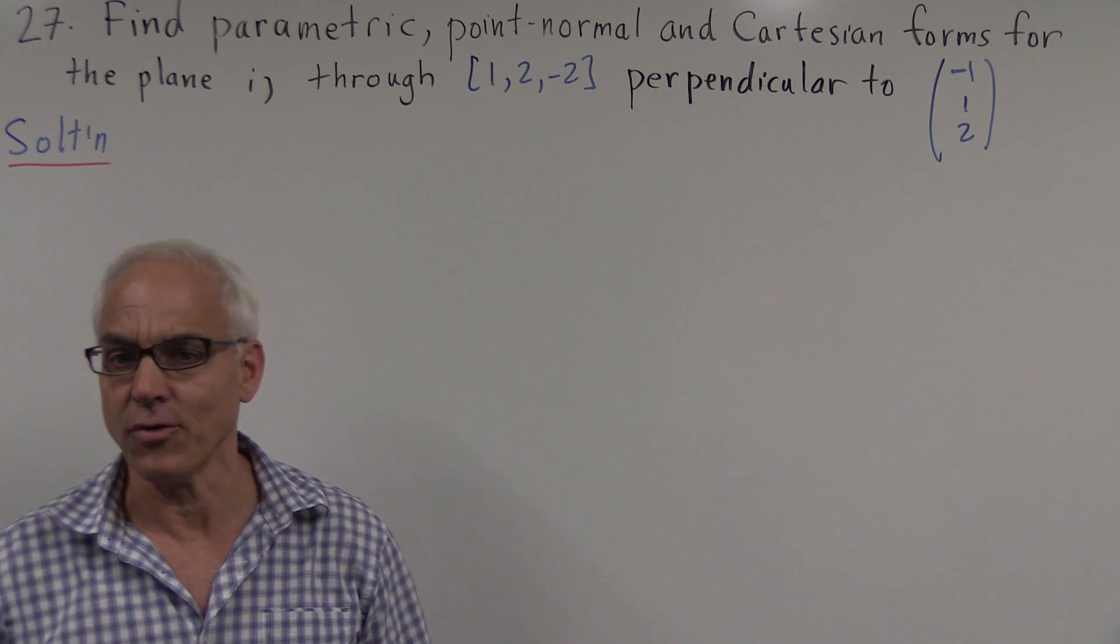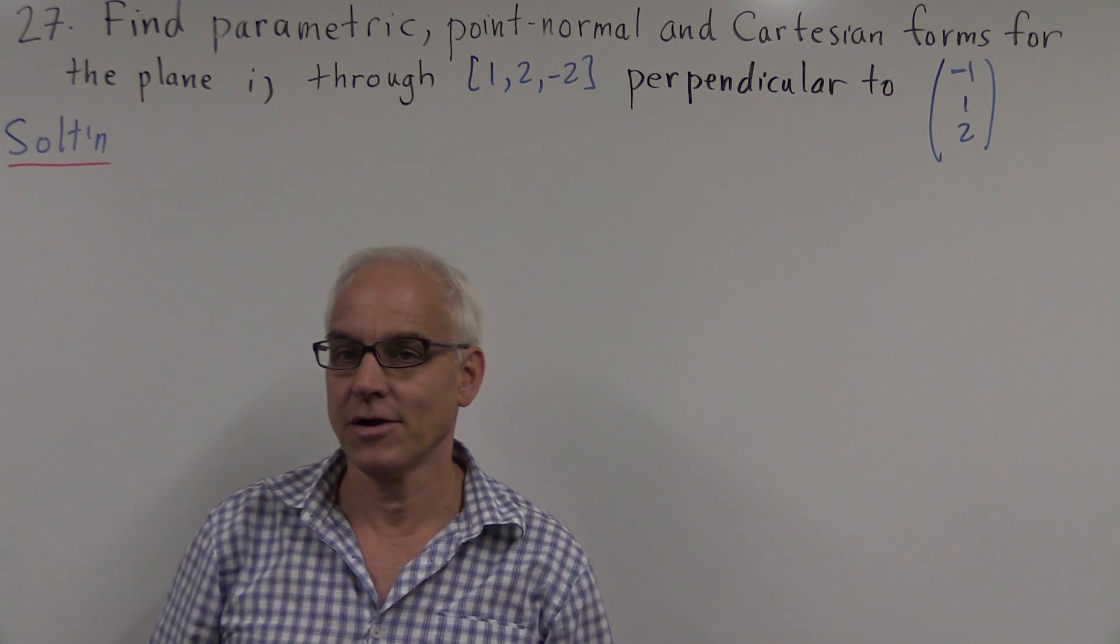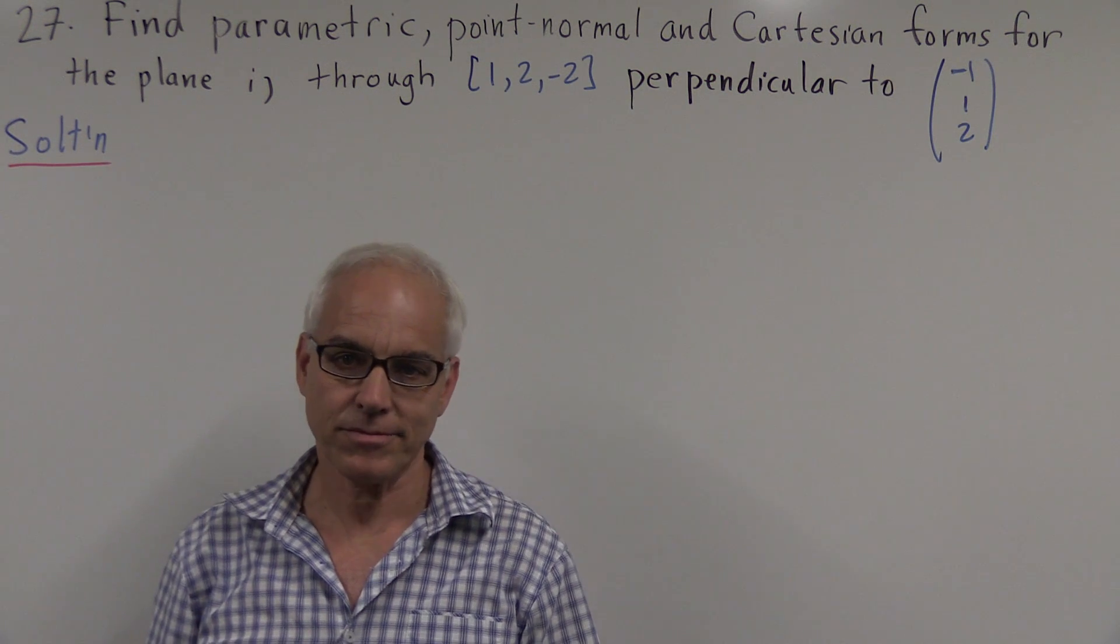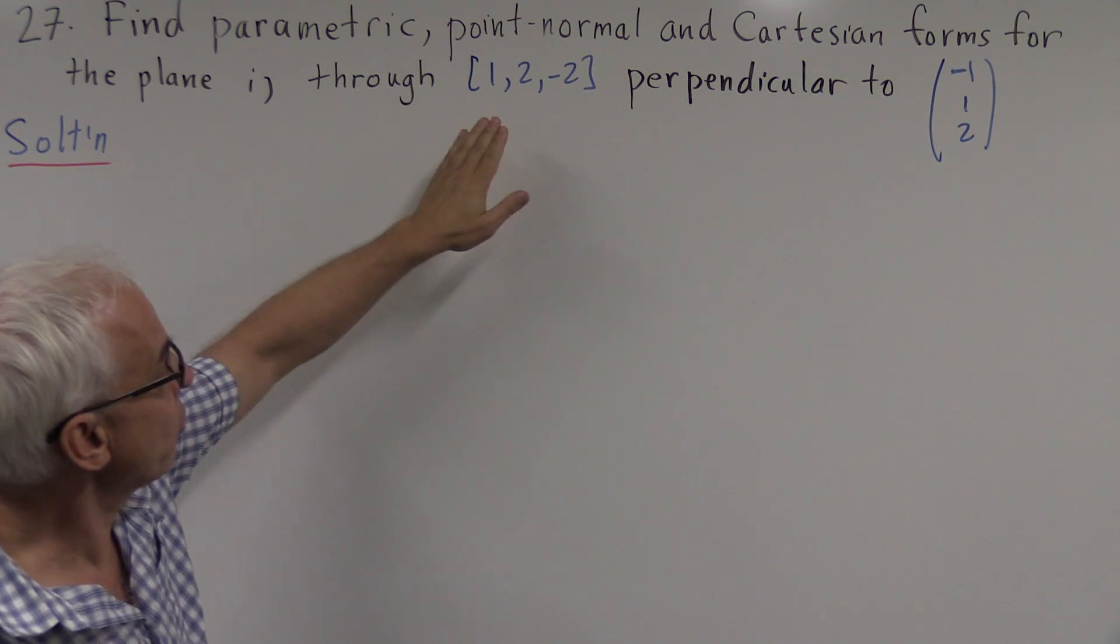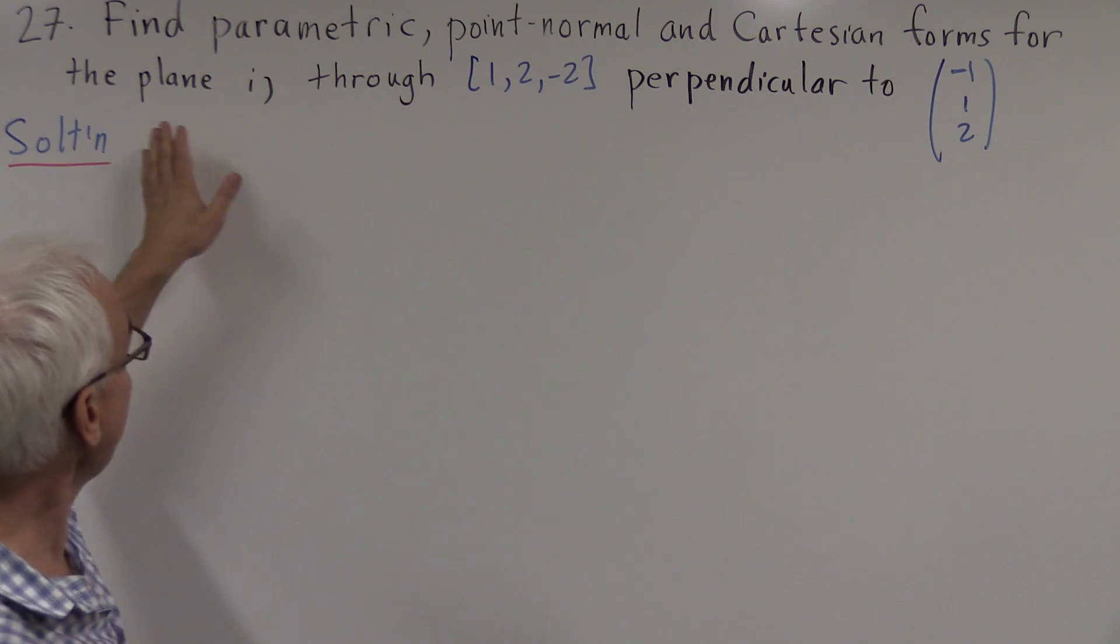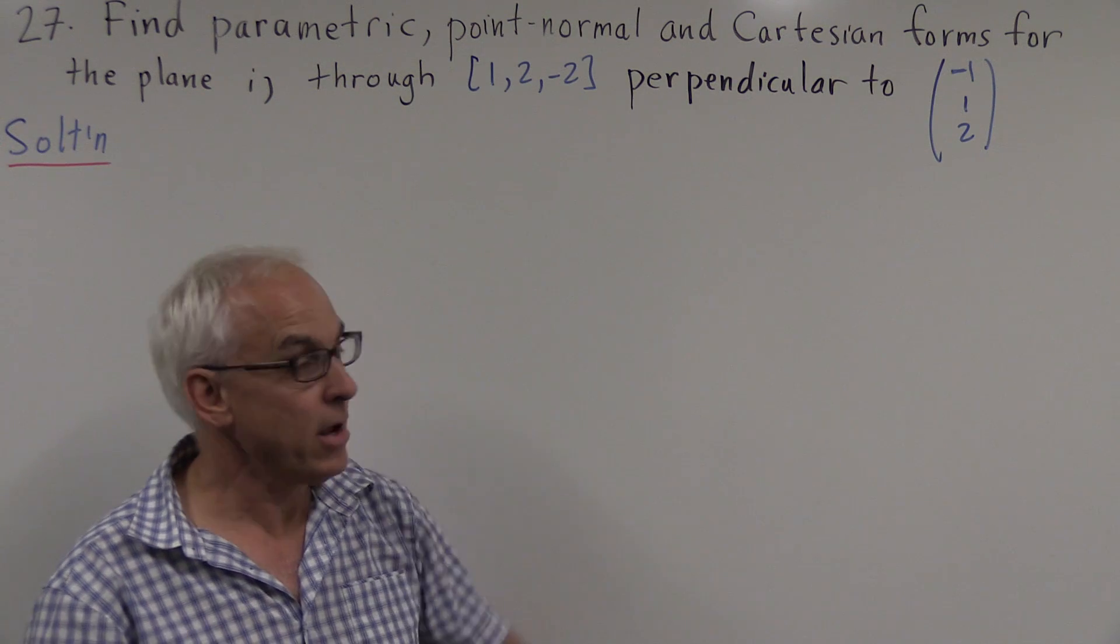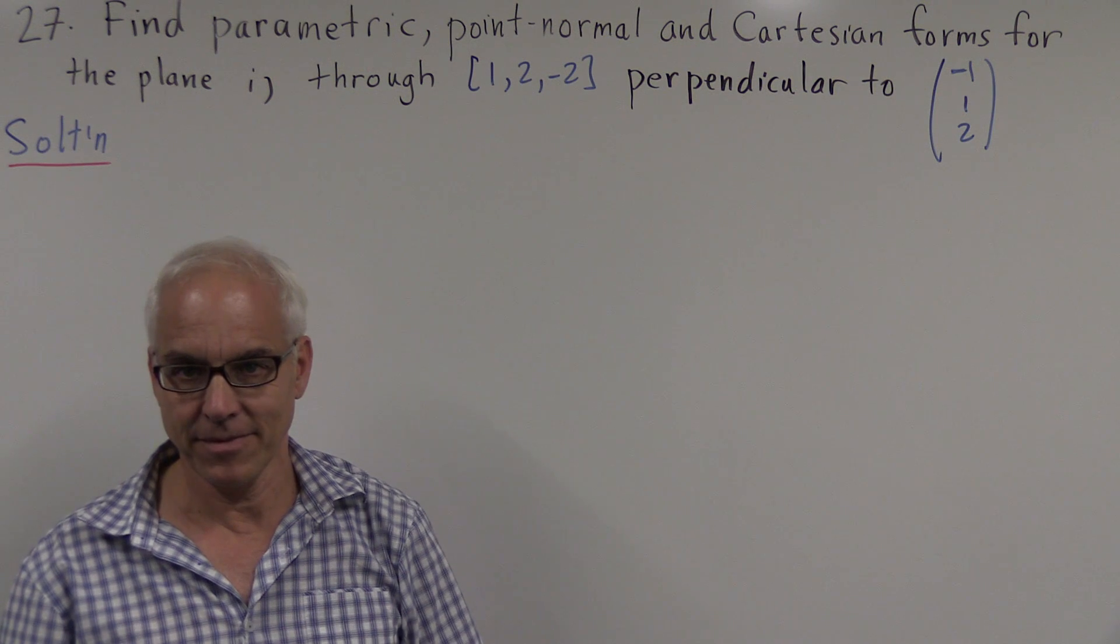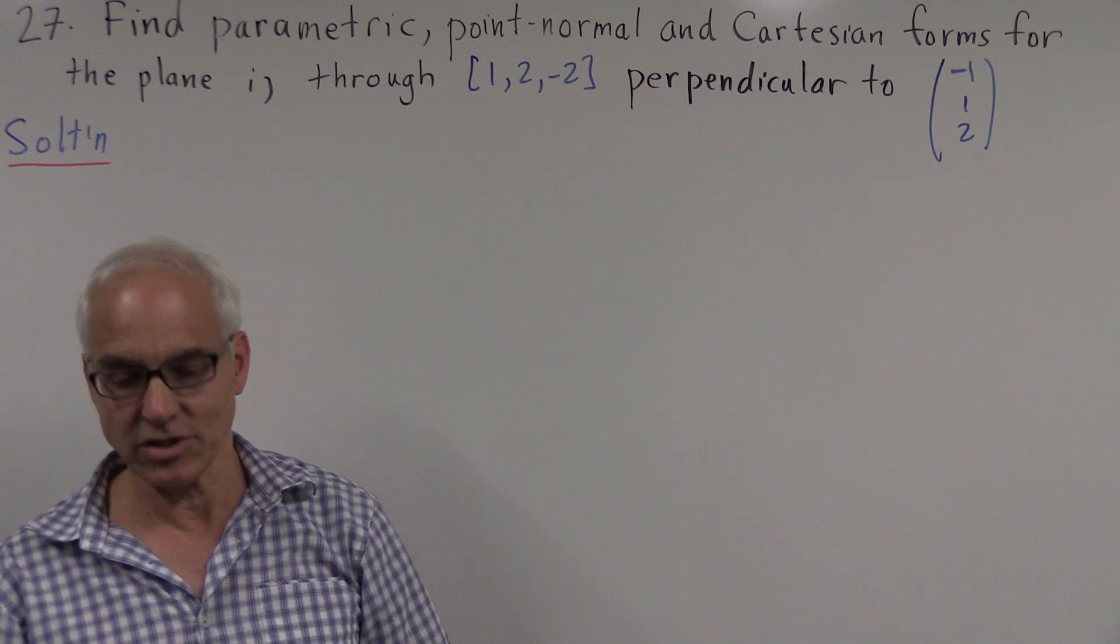Hello, we're here at the University of New South Wales. I'm Norman Weilberger. We're having a look at question 27 from chapter 2 on vector geometry. This question is asking us to find parametric, point-normal, and Cartesian forms for the plane through the point (1,2,-2) perpendicular to the vector (-1,1,2). Three different ways of describing the same plane in three-dimensional space.